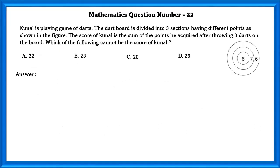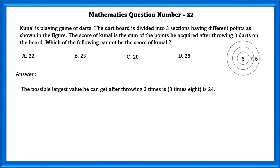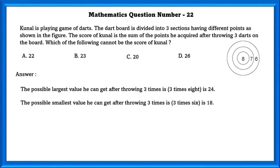Mathematics question number 22. Kanul is playing a game of darts. The dart board is divided into three sections having different points as shown in the figure. The score of Kanul is the sum of points he acquired after throwing three darts on the board. If Kanul puts his darts three times on eight, that would be the maximum value, that is 24. And for the minimum value, if he puts his darts three times on six, that is 18, which is the minimum value.